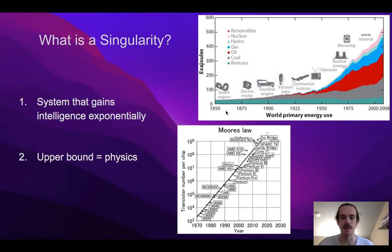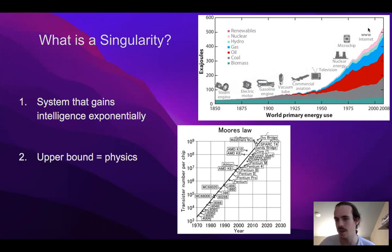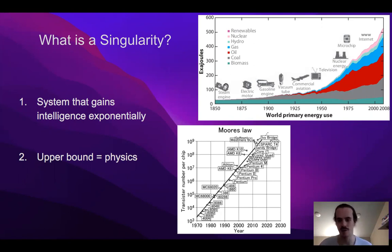Until 1850, the time between each critical invention shrunk to only about 20 years instead of thousands of years. So in 1850 we invented the steam engine, and then eventually the electric motor, the car, the plane, the TV, the microchip, and the internet — and we're essentially getting smarter and smarter at an exponential rate as a whole system.